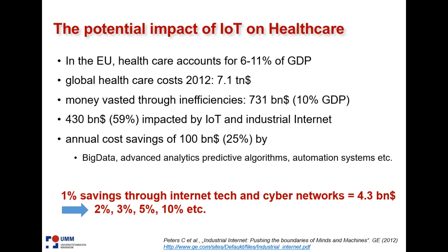If you look at it, 10 percent is basically wasted through inefficiencies, and half of this 10 percent is being impacted by new technologies like IoT. And if you could save annual costs of 100 billion dollars — these are projections that could be made — if you save 1 percent, this will free a lot of money, and that's why many are interested in taking this money back and doing other things with it.